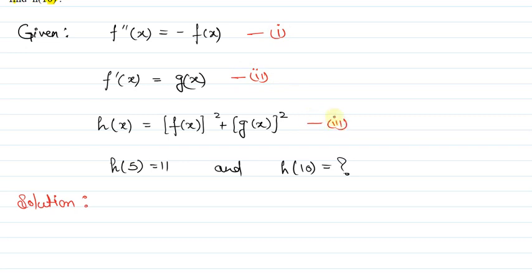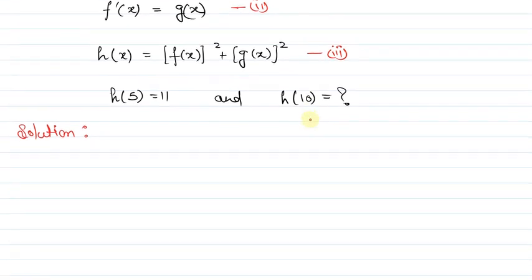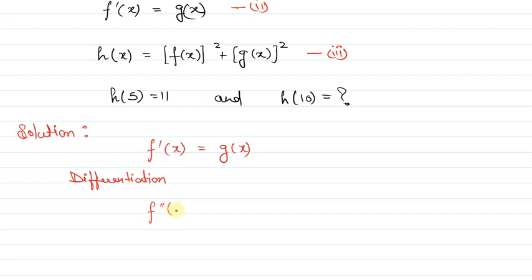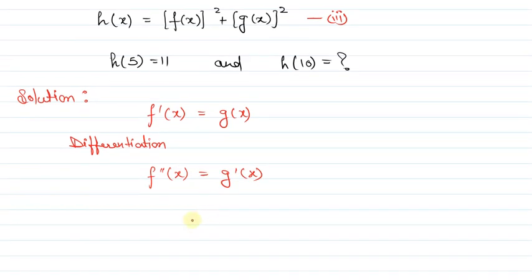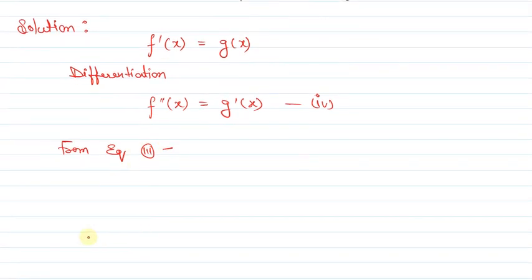Now let me label the equations: f''(x) = -f(x) as equation 1, f'(x) = g(x) as equation 2, and h(x) = f(x)² + g(x)² as equation 3. First, let me look at the second equation — f'(x) = g(x) — since f is twice differentiable.